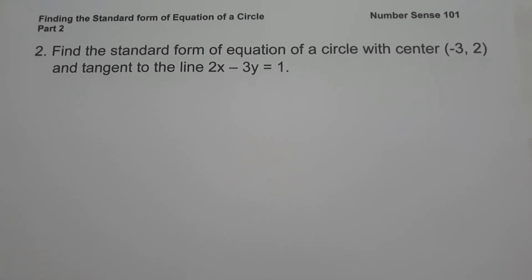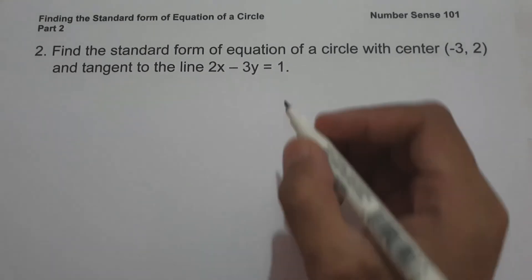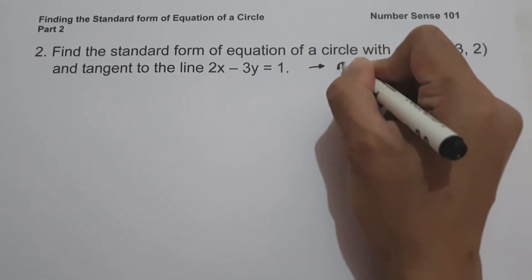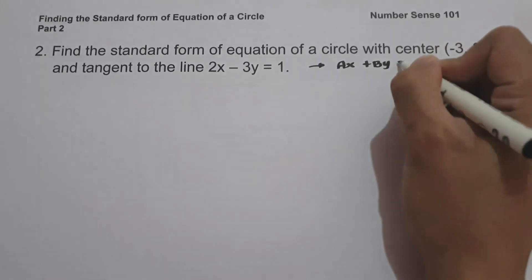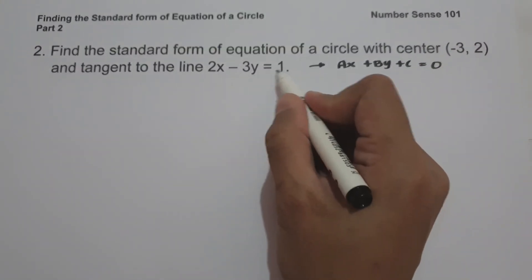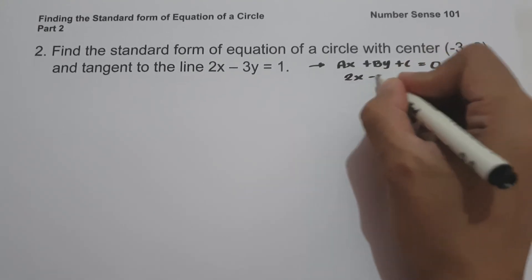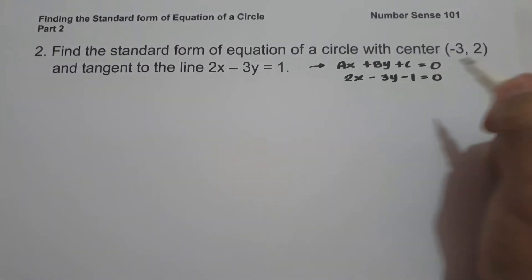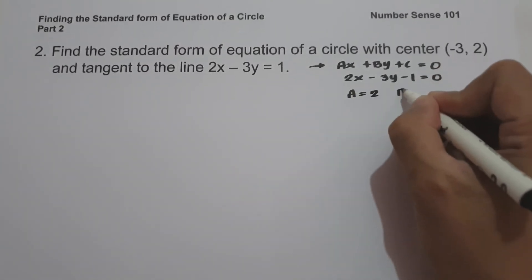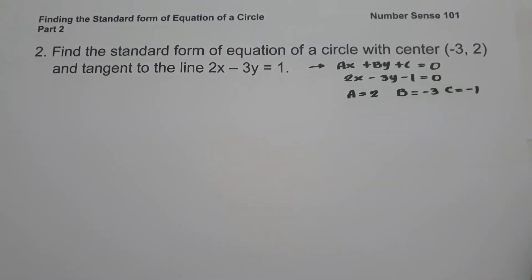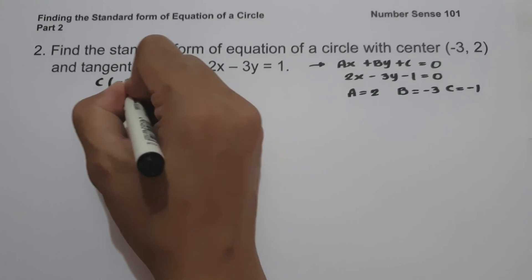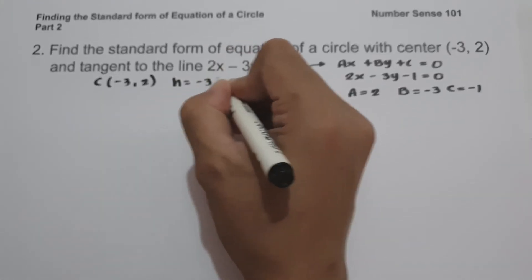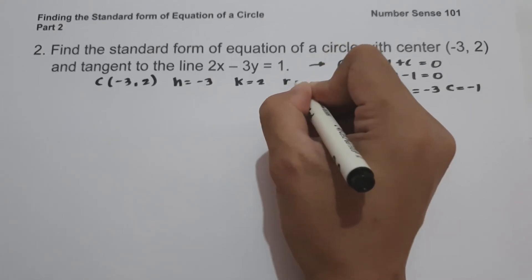For our last example: find the standard form of equation of a circle with the center at negative 3 comma 2 and tangent to the line 2x minus 3y equals 11. The first thing we do is rewrite 2x minus 3y equals 11 in the form ax plus by plus c equals 0, giving us 2x minus 3y minus 11 equals 0. So a equals 2, b equals negative 3, c equals negative 11. Our center is (negative 3, 2), so h equals negative 3, k equals 2, and we are looking for the radius.